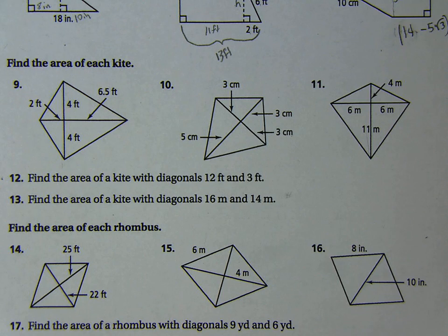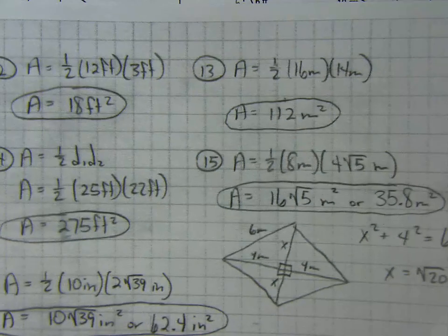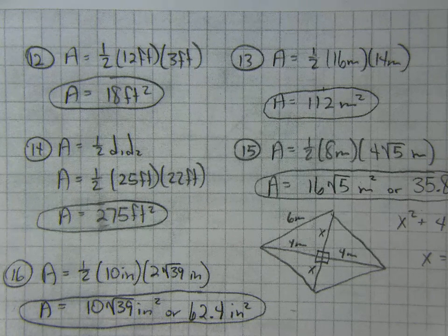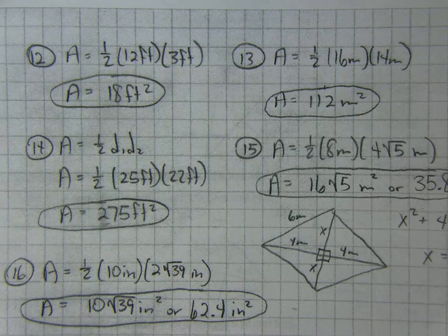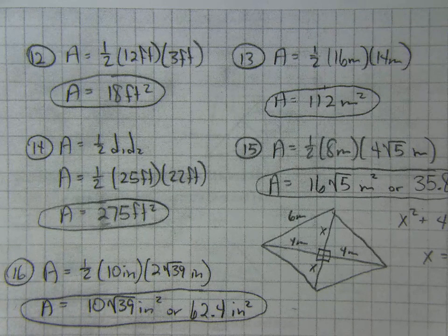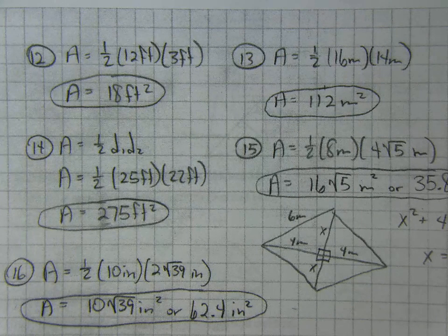12 and 13, I have the answers to those two also. So there's number 12. One-half of 12 feet and 3 feet is 18 feet squared. Number 13, one-half of 16 meters and 14 meters is 112 meters squared.